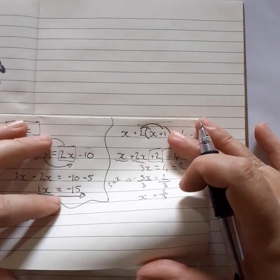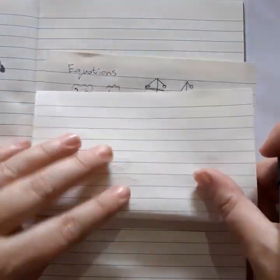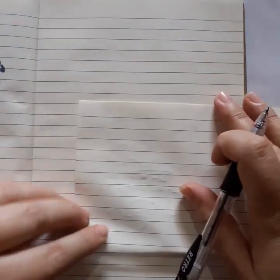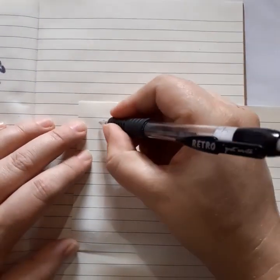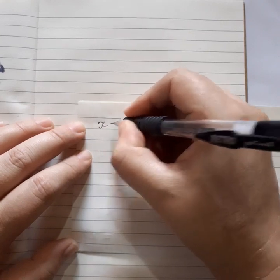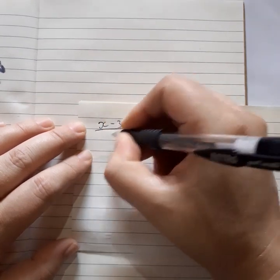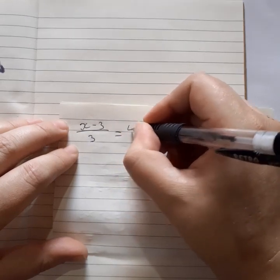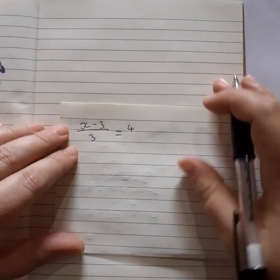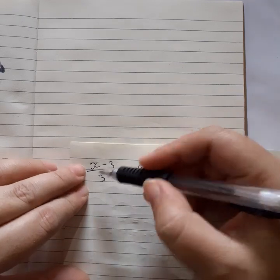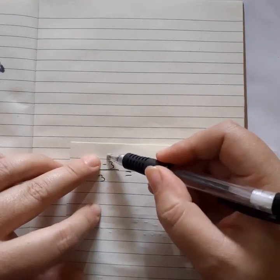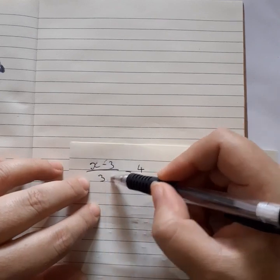Okay, let's do one with fractions. So let's say we have x minus 3 over 3 equals 4. Okay, so what do we need to do here? We want to get the x by itself, but we can't because we've got a fraction. So we can't move this 3 because it's part of this fraction.